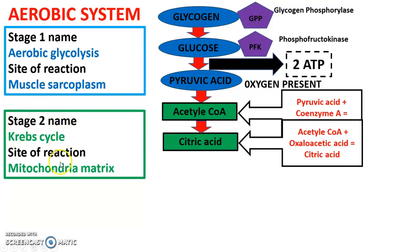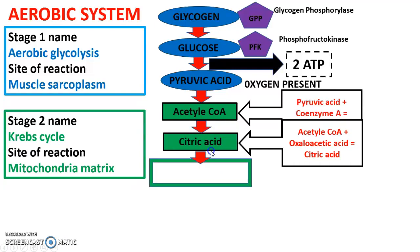Stage two is called the Krebs cycle. The site of reaction is the mitochondria matrix — the powerhouse part of the cell where lots of energy can be created. Citric acid enters the Krebs cycle and is oxidized. When it goes in, a chain of reactions takes place. Three things result: first, CO2 is removed as a waste product — we can breathe it out. Second, 2 ATP are released, giving us energy production.